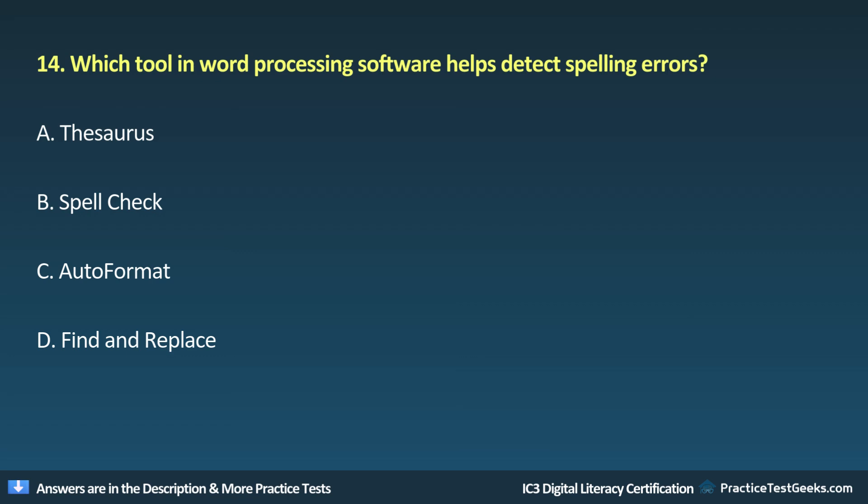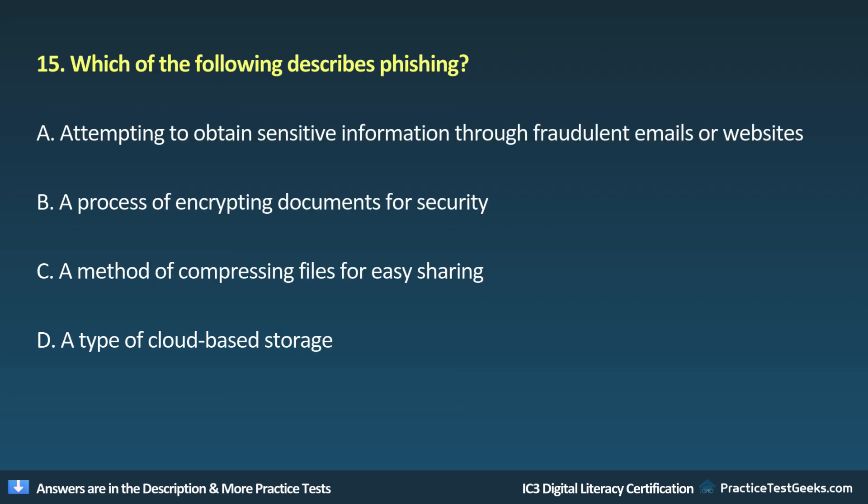Question 13: Which word processing feature helps you find synonyms for words? A. Thesaurus. B. Spellcheck. C. Autoformat. D. Find and Replace.